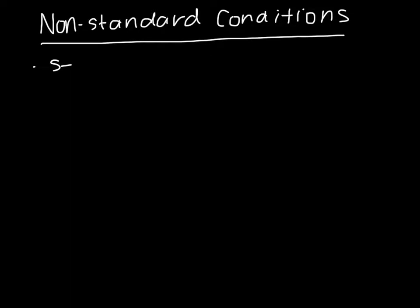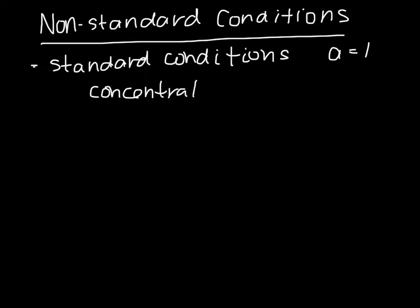Let's consider what happens when an electrochemical cell is operating under non-standard conditions. As a reminder, the standard condition assumes that the activity is equal to 1, or that the concentration of the ionic solution is 1 molar, which means 1 mole per liter.